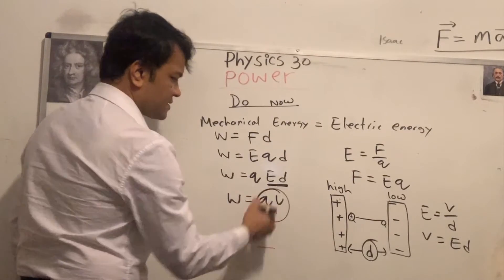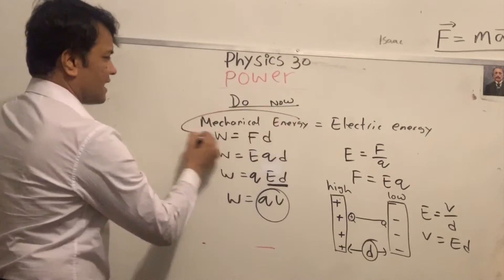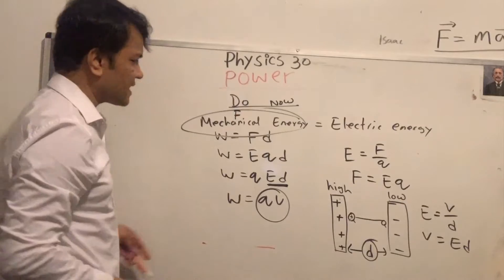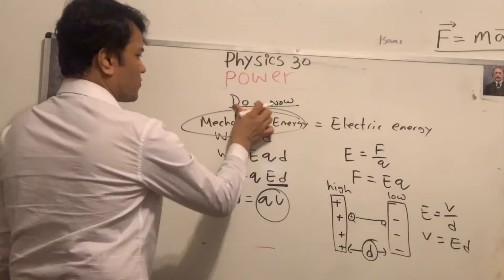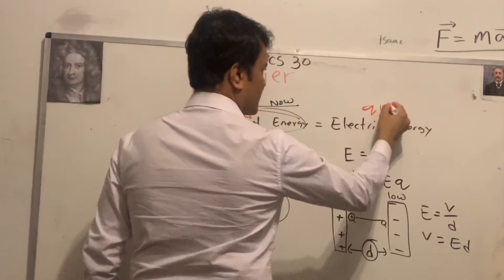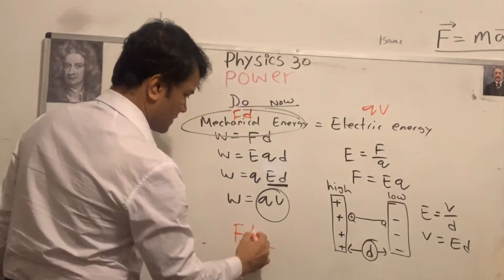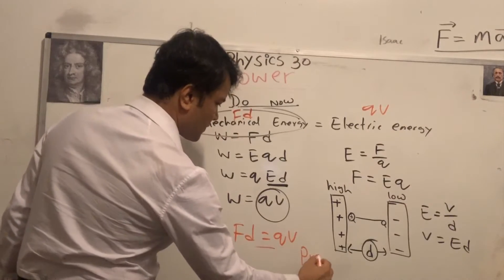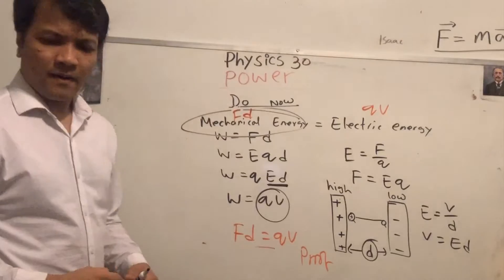Since V = Ed, we substitute back: W = qEd = qV. So mechanical energy W = fd equals electric energy W = qV. Therefore fd = qV. This is the proof!